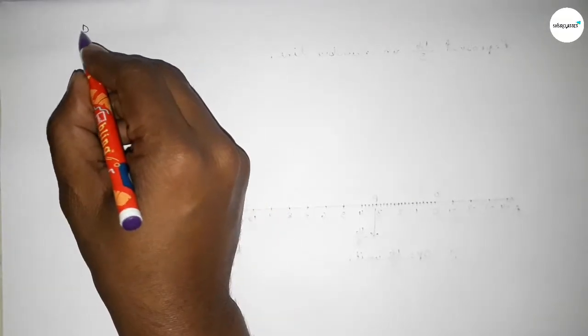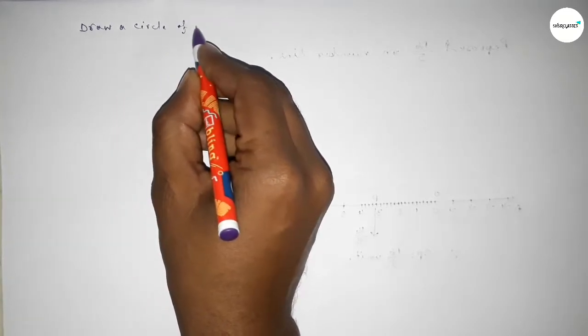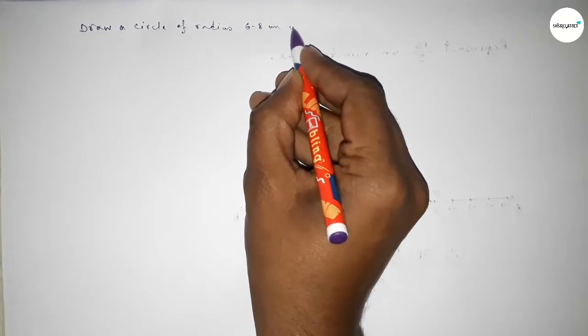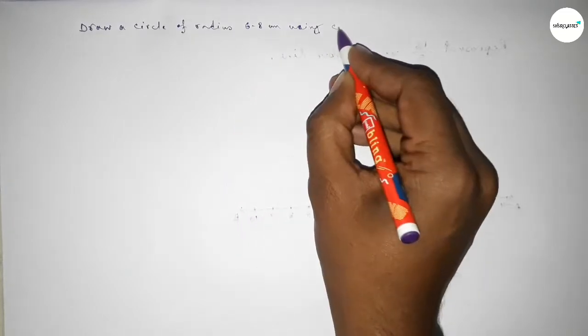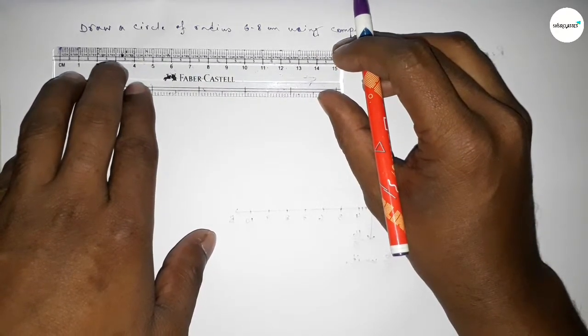Hi everyone, welcome to SI Share Classes. Today in this video we have to draw a circle of radius 6.8 centimeter using a compass. Let's start the video. First of all, drawing the radius of 6.8 centimeter here.